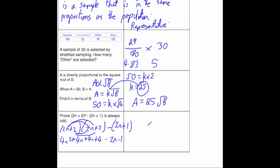So let's simplify this. We've got our 4n² here plus 8n. And we've got plus 4. And we're going to take away 2n. And we're going to take away 1. So let's simplify this.